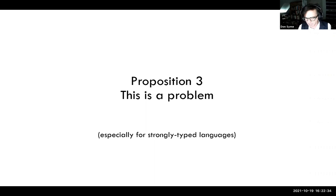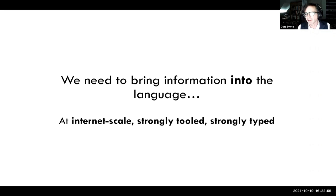This is particularly a problem for strongly typed languages because we can't access anything without giving it types. And yet we have this incredibly information-rich world around us that we can't automate the synthesis or access to the degree we want to be able to do. We just have to code up the world library by library. Instead, we want to take a different approach: bring all the information in at internet scale, strongly tooled and strongly typed. That's the philosophy we were running with, and I think it's a radical point of view.